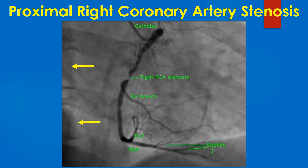The right anterior oblique view shows the proximal part of the right coronary artery in an almost vertical line. The RAO view is identified with the spine seen on the right side, marked by yellow arrows. The lesion in the RCA just before the RV branch is seen to be tighter than from the LAO view, suggesting that it is an eccentric lesion.